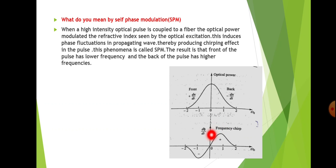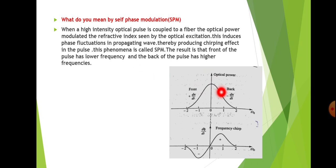The result is that the front end of the pulse has lower frequency and the back of the pulse has a higher frequency. This is the refractive index variation or optical power variation, and due to the frequency chirping the pulse will look like this in the case of self-phase modulation.